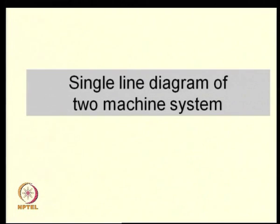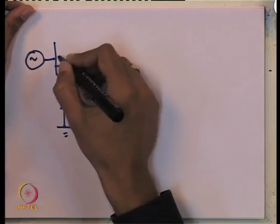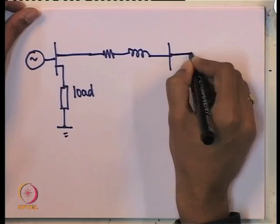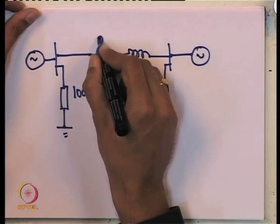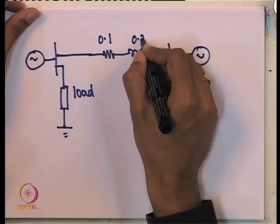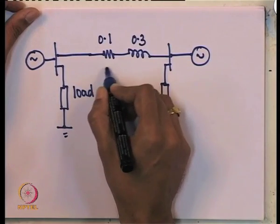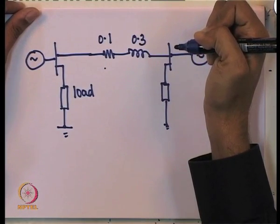The single-line diagram of the system we are going to consider has a load, a transmission line, two generators, and another load. The resistance here is 0.1 per unit and 0.3 per unit. The important thing to notice is the interconnection — this is a transmission line. Remember we are taking an R-L kind of lumped model of the transmission line.